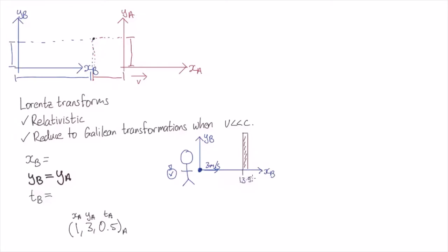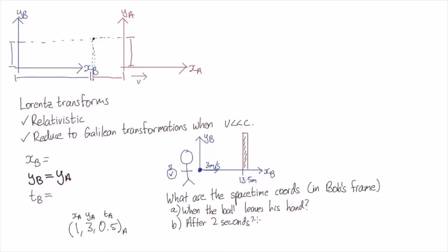So in Bob's frame, what are the space-time coordinates of the event? A: of the ball leaving his hand, B: of where the ball is after two seconds, and C: when the ball hits the wall. Assume that there's no gravity, the ball just travels straight ahead without falling.